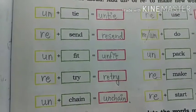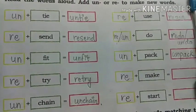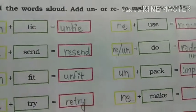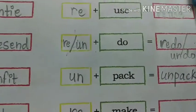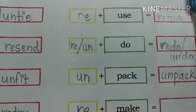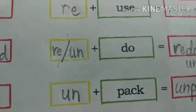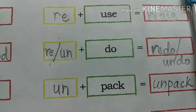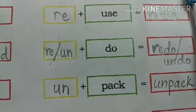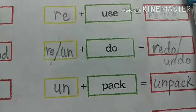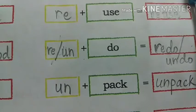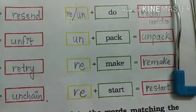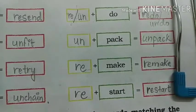Now come to the right-hand side session. Reuse — R-E-U-S-E — Reuse. Then Redo, or we can also write Undo — we can write both with 'do'. Then Unpack. Then Remake. And Restart.